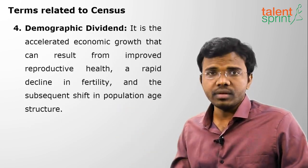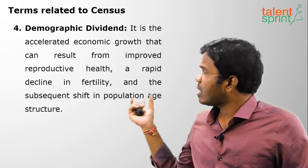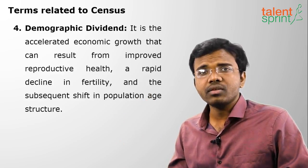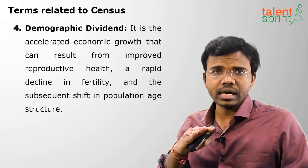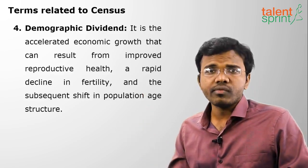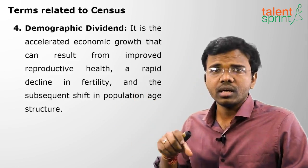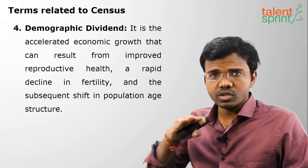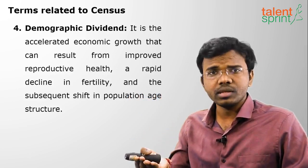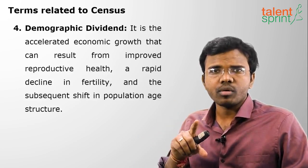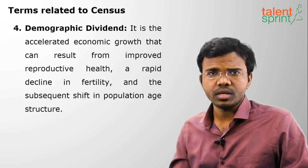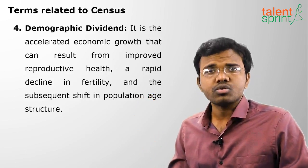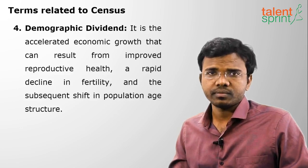The next term is demographic dividend, which is the accelerated economic growth resulting from a decline in fertility. Decline in fertility means the number of births are slowly declining. This is very useful for a country — whatever population already exists will be useful for actual production of national income. For example, the population below 35 years of age will be useful for producing different components of the country's GDP.